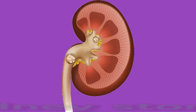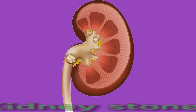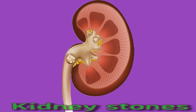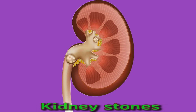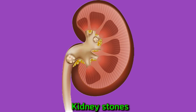Kidney stones occur when salts and minerals build up in the kidneys and form small deposits. These stones can get bigger over time. Smaller kidney stones usually pass from the kidneys without causing symptoms. Larger kidney stones can cause discomfort when moving through the urinary tract and can also get stuck in the kidney. Symptoms include blood in the urine, pain during urination, vomiting, nausea, and sharp pain in the back or abdomen.